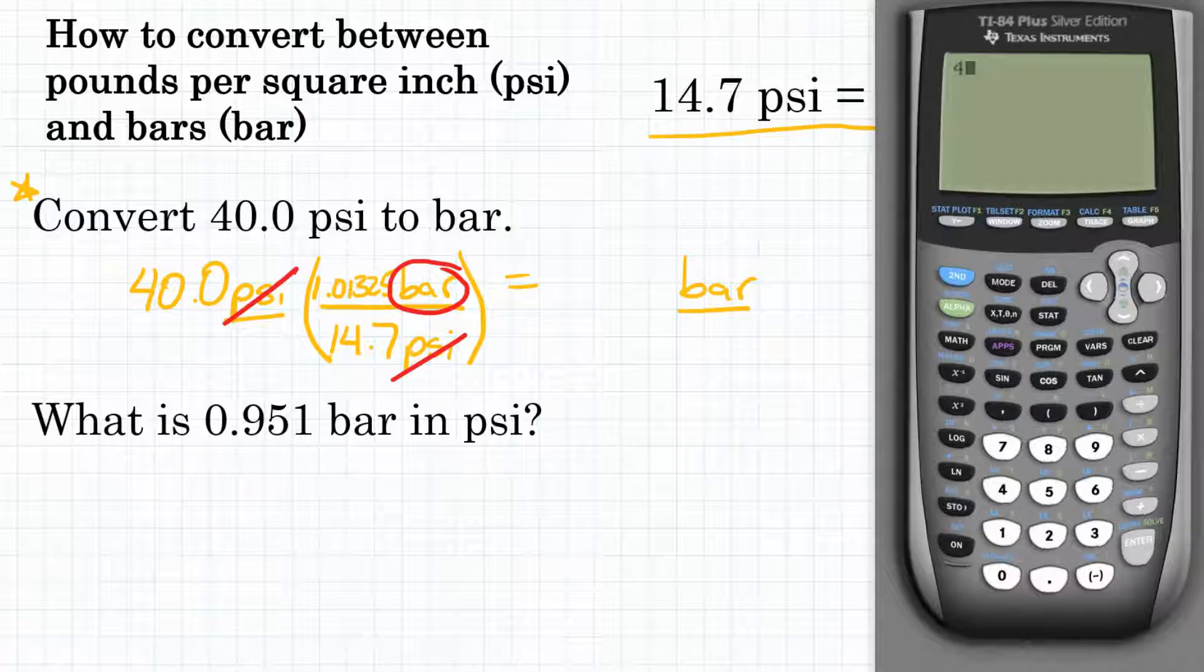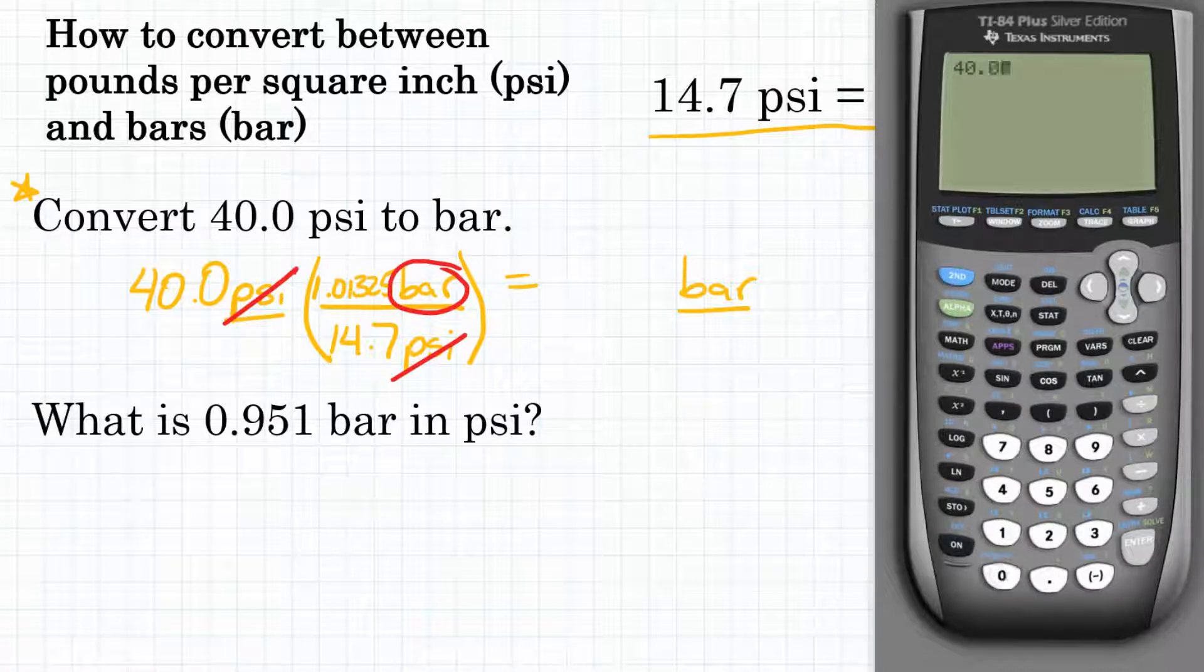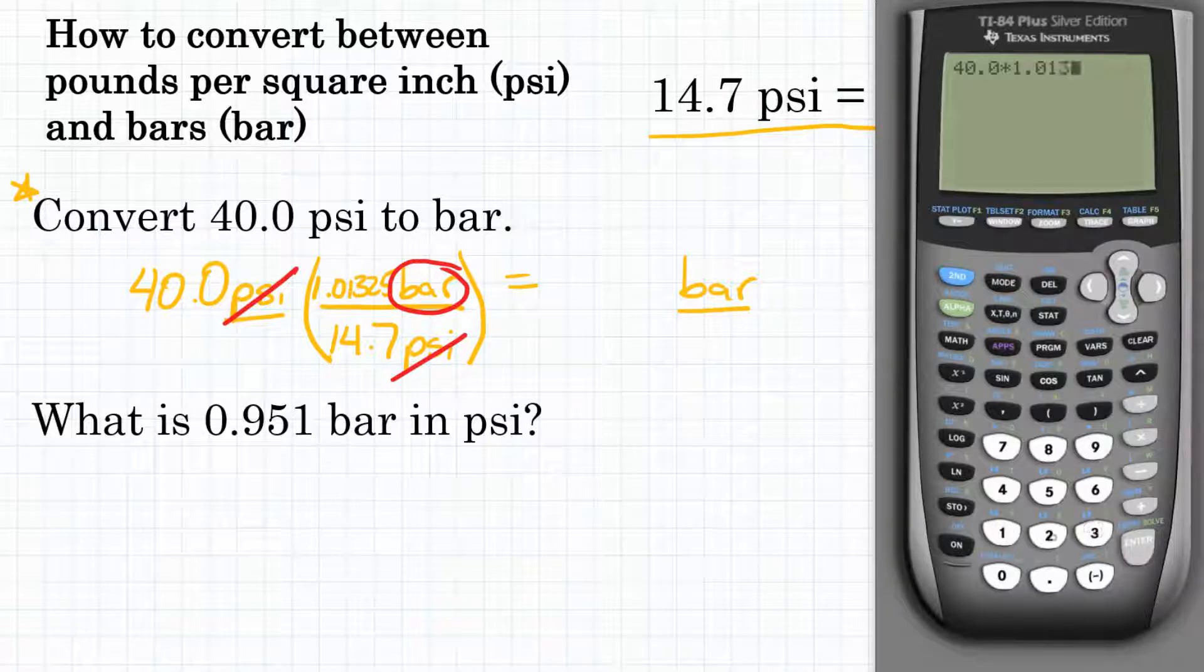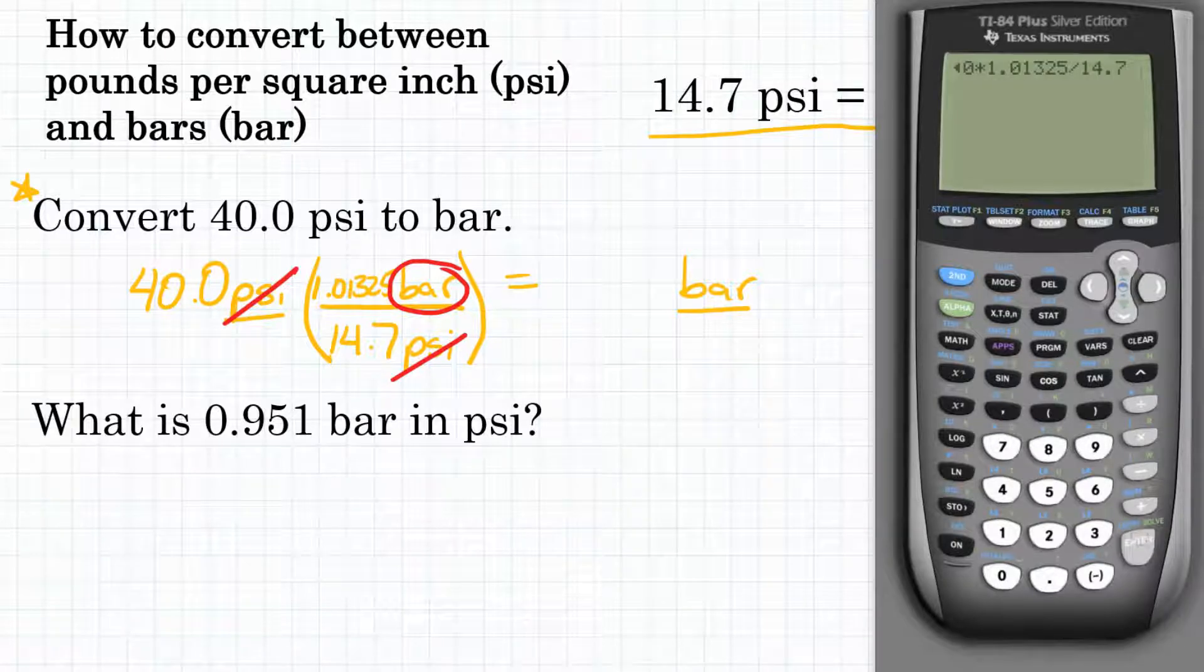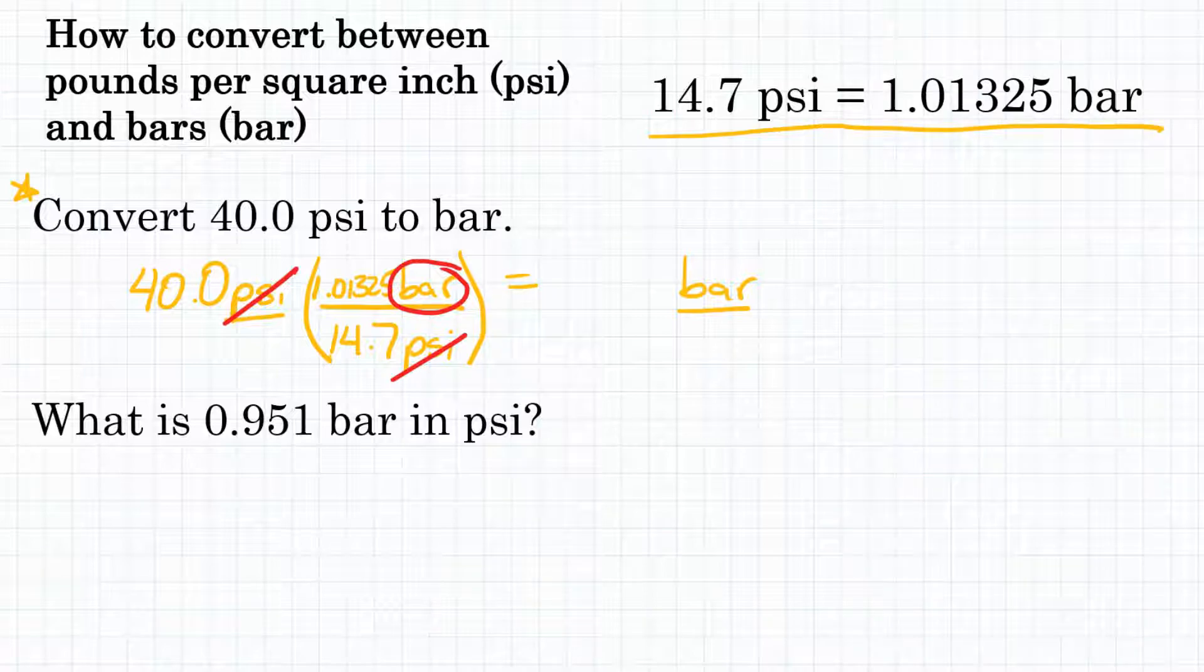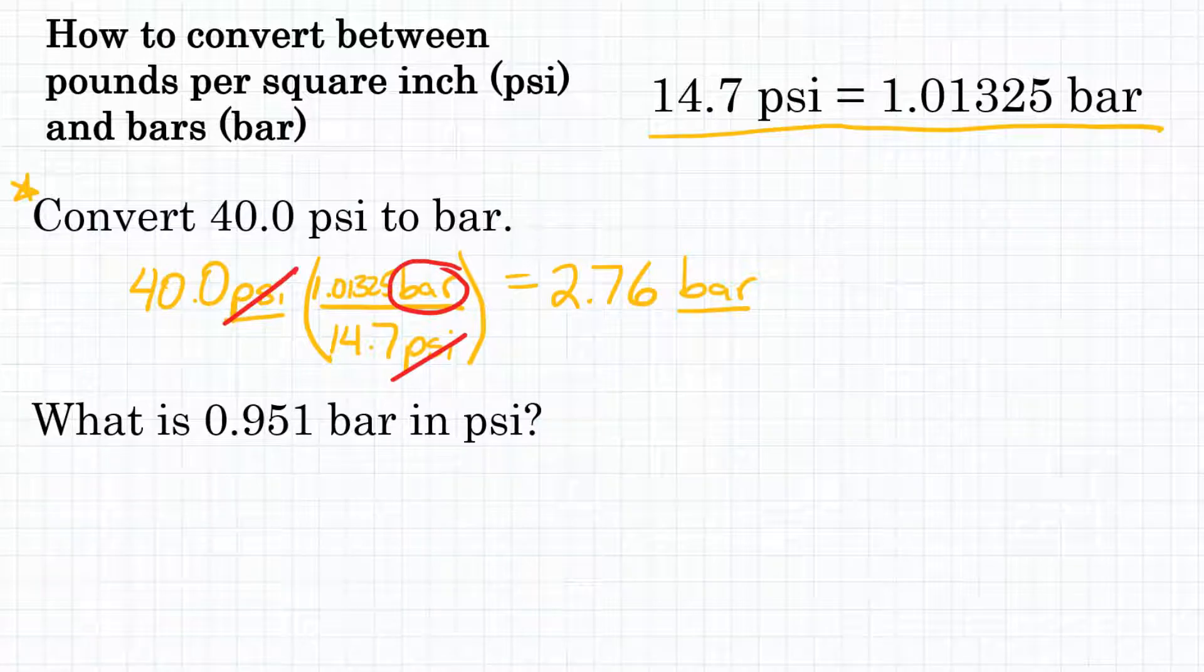We're going to start with 40.0. And since we're multiplying by our fraction, our conversion factor, we're going to be multiplying by the top and dividing by the bottom. So we will multiply by 1.01325, and we will divide by 14.7. Let's round that to three significant figures, so we would get 2.76. So 2.76 bar is equal to 40 PSI.